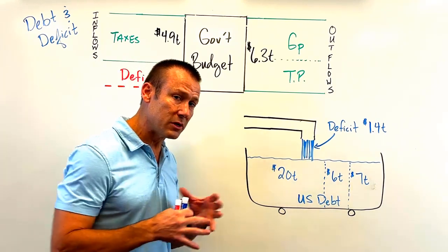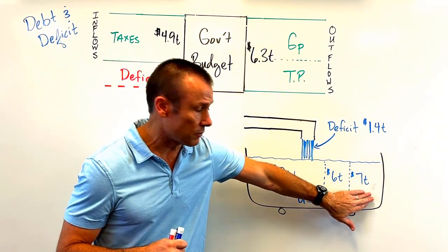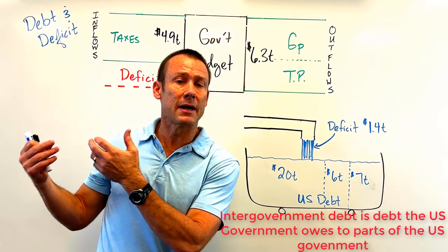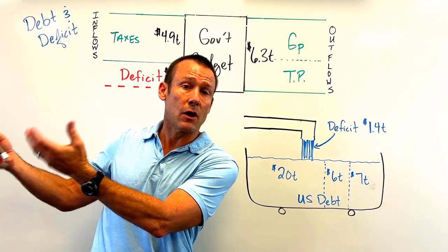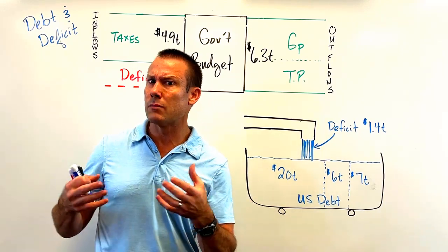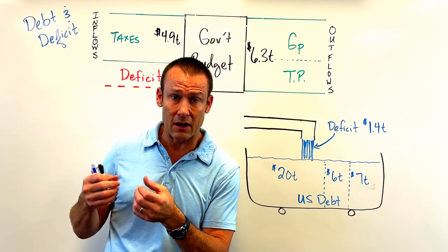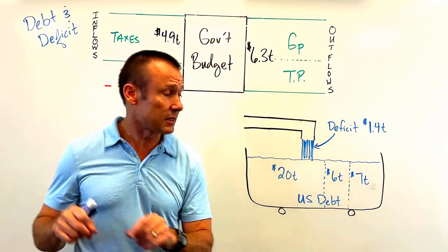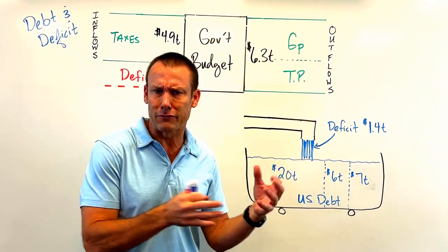We can break that $33 trillion into a few buckets. The major two divisions: first is what we call inter-government debt — debt the U.S. government owes to itself. That's like borrowing from your own IRA or 401(k), your retirement savings. Is it really debt if you owe it to yourself? There's argument either way, but borrowing from your retirement account could make things worse in the future.